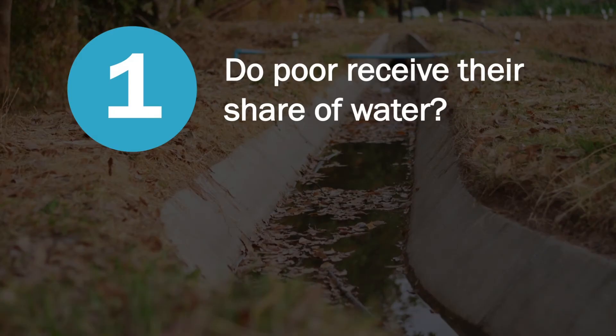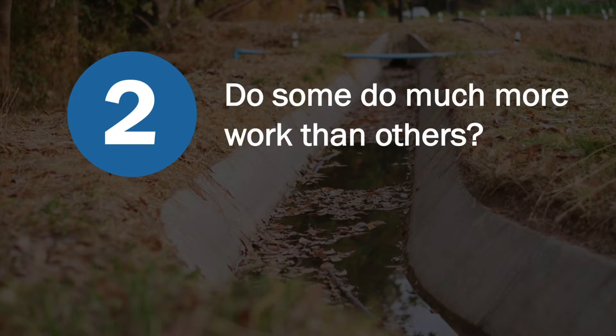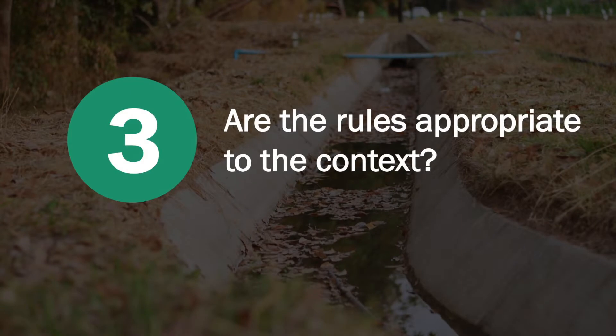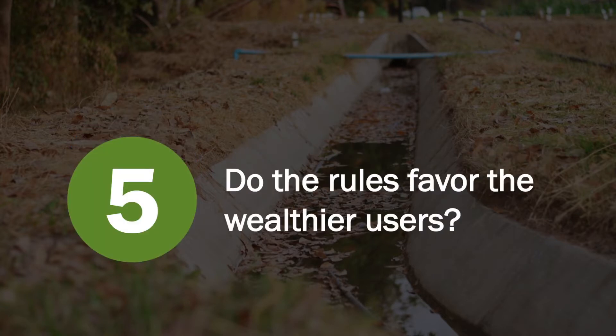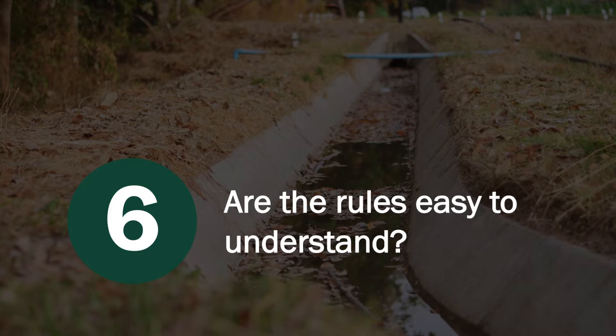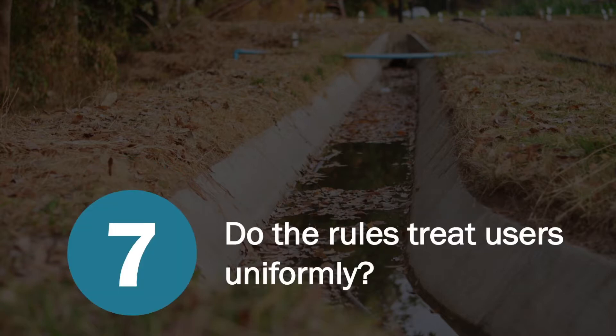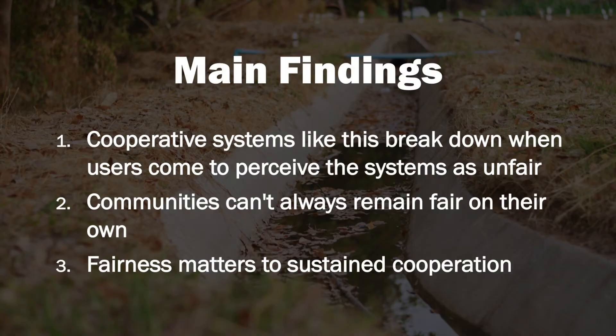In these farmer-managed irrigation canals, perceptions of fairness meant seven things: one, do the poor receive their share of water? Two, do some in the community do much more work than others? Three, are the rules appropriate to the context in which the canal is situated? Four, do the rules discriminate against some users? Five, do the rules favor wealthier users? Six, are the rules easy to understand? And seven, do the rules treat users uniformly? These seven aspects together comprise perceived fairness. The main findings were that cooperative systems break down when users come to perceive the system as unfair, and communities can't always remain fair on their own. Fairness matters to sustain cooperation.